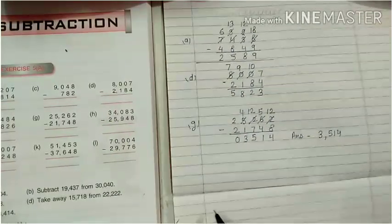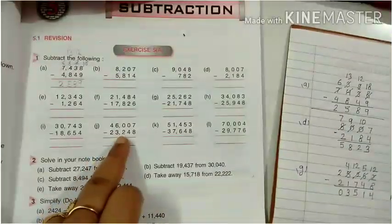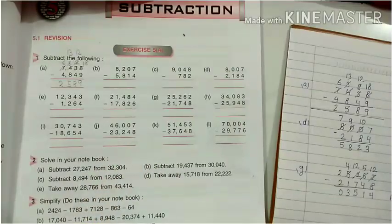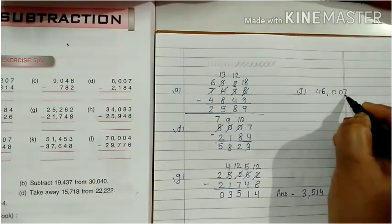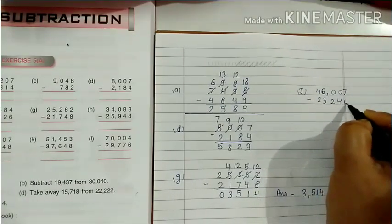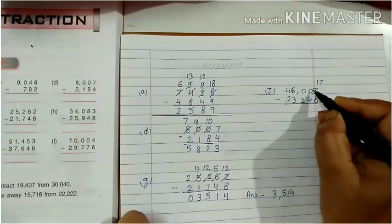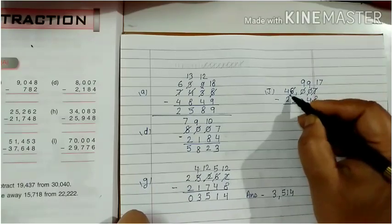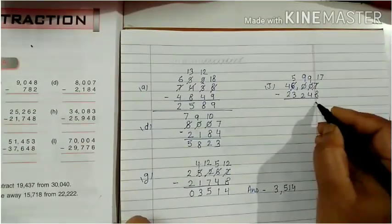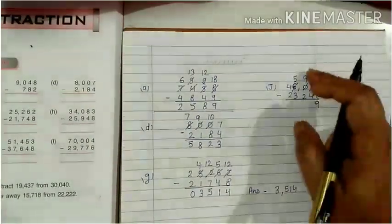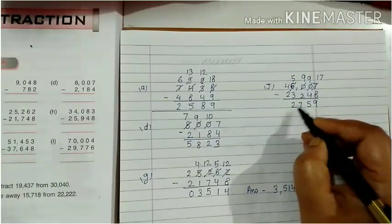Let's do Question J: 46,007 minus 23,248. We will take a carry. It will become 17 and the adjacent digits will become 9, 9, and 5 through the carrying chain. 17 minus 8 is 9. 9 minus 4 is 5. 9 minus 2 is 7. 5 minus 3 is 2. And 4 minus 2 is 2.